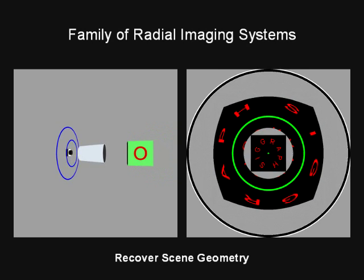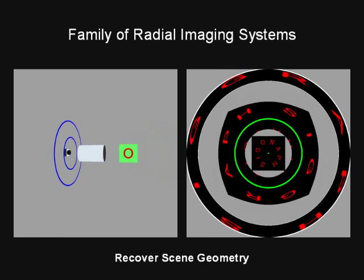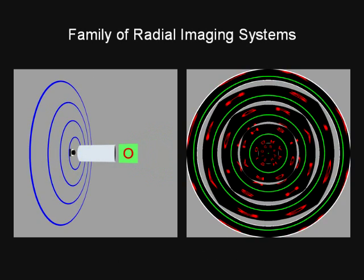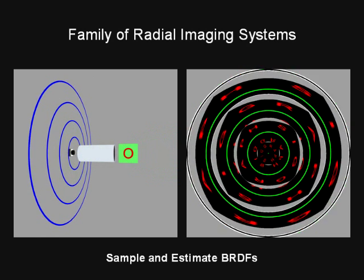When the mirror becomes cylindrical, the system becomes more suitable to recover the geometry of smaller nearby objects. If we extend the cylinder, we see that the green center point on the top face is imaged by multiple circular loci of virtual viewpoints. This allows us to estimate the BRDF of that point.